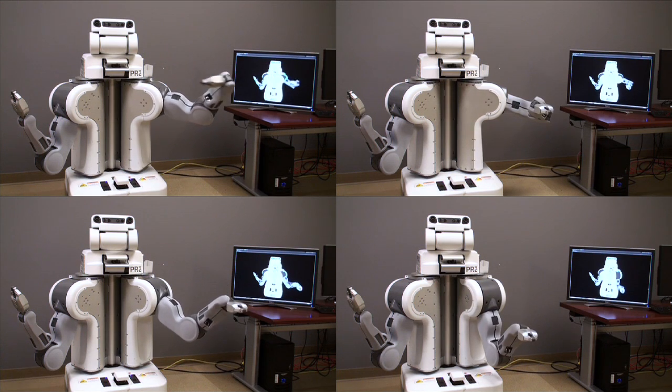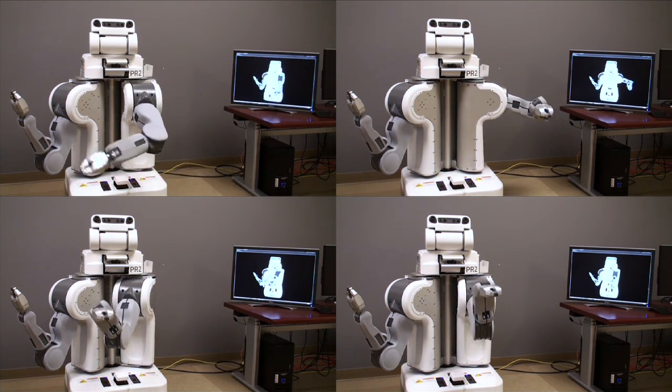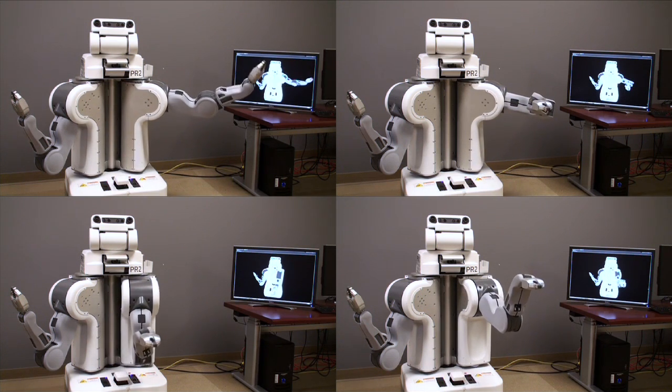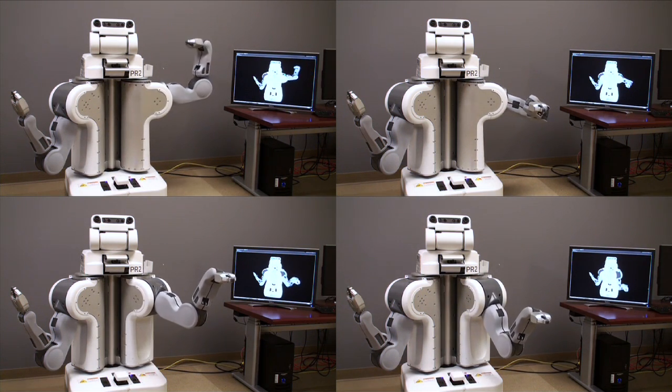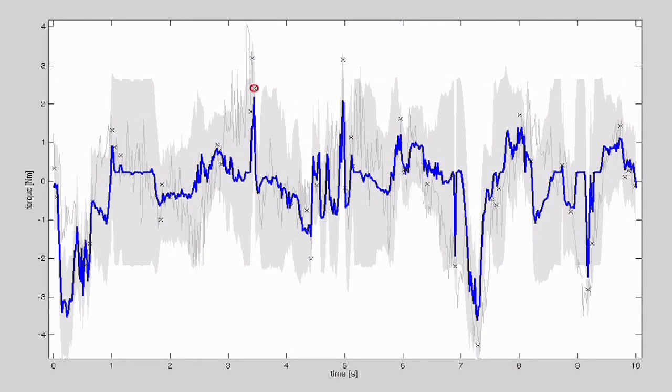We measured joint torque data directly on the PR2 robot for a variety of motion profiles. The collected information was processed by a machine learning technique called Gaussian process regression. Each data point helps to gradually improve the prediction quality of our model.